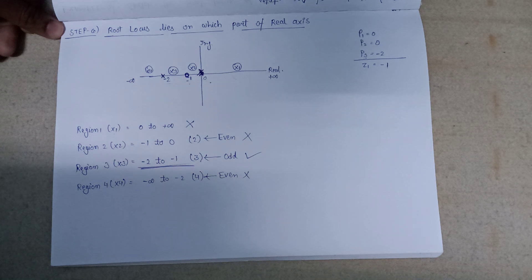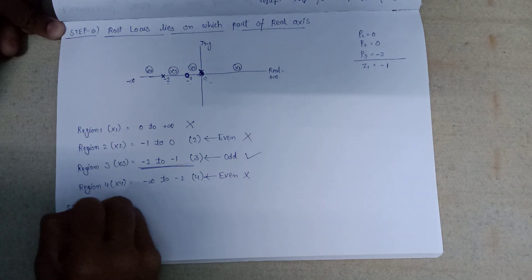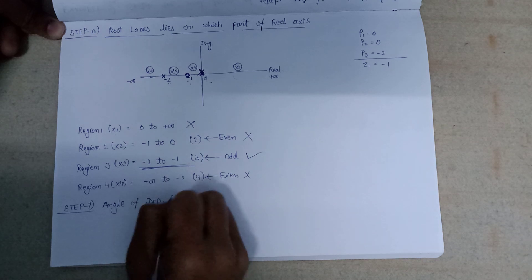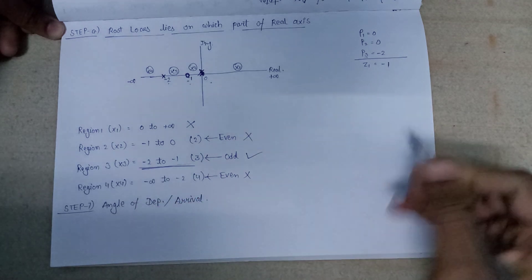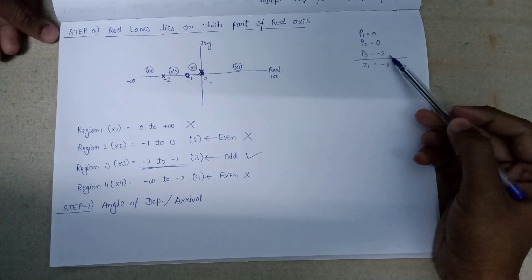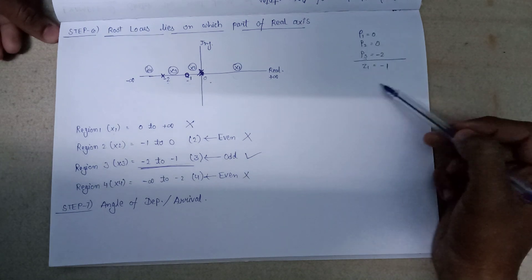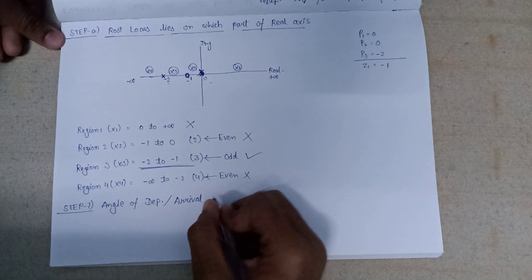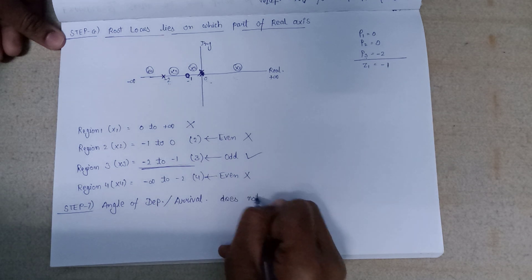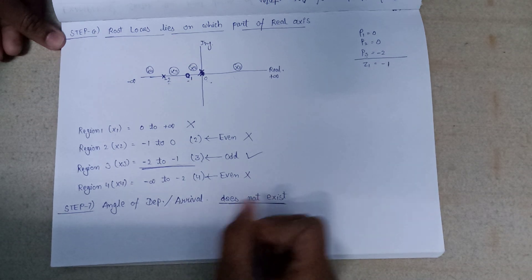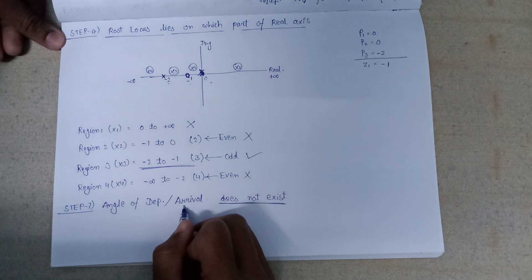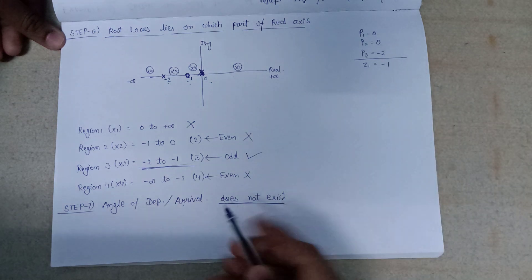Moving to the next step: angle of departure and angle of arrival. Since the poles are at 0, 0, and -2, and the zero is at -1, there are no imaginary (complex) poles or zeros. Therefore the angle of departure and angle of arrival do not exist here, as they only apply when there are complex poles.